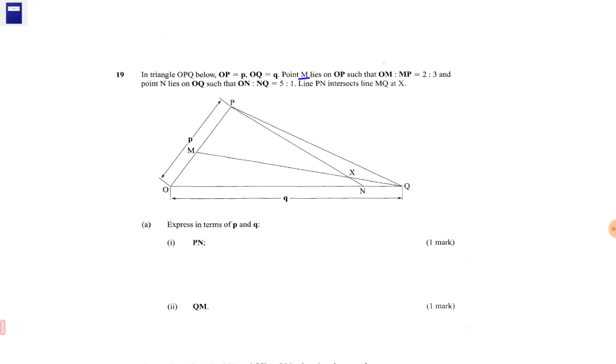Point M lies on OP such that OM to MP is equal to 2 to 3, and point N lies on OQ such that ON to NQ is equal to 5 to 1. Line PN intersects with MQ at X.